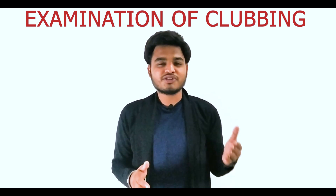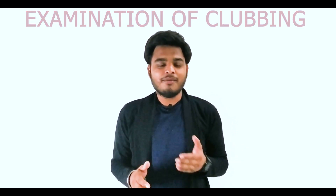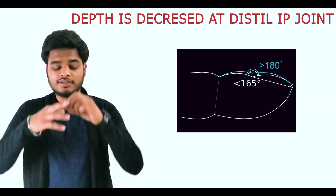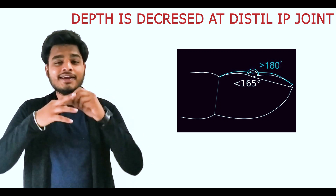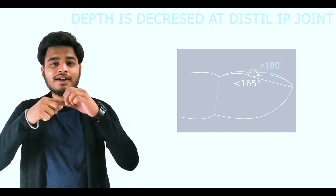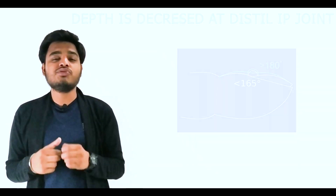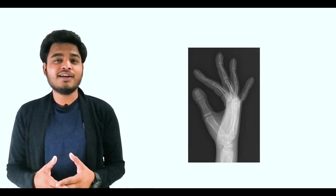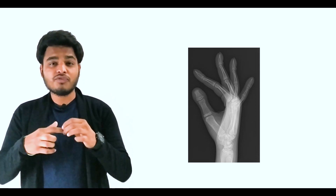Moving on to the examination of clubbing: by observing the nail plates and distal IP joint, we can get a basic idea of clubbing. We assess the depth at the distal IP joint. In clubbing, there is a decrease in depth at the distal IP joint, or a decrease in the anteroposterior diameter at the level of the distal interphalangeal joint.